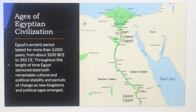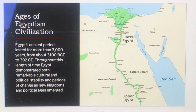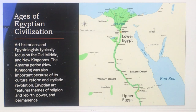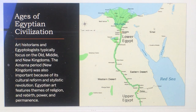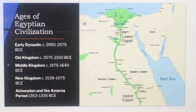The ancient Egyptian civilization lasted more than 3,000 years, from about 3100 BCE to 392 of the current era. Throughout this time, Egypt demonstrated remarkable cultural and political stability as well as periods of change as new kingdoms emerged. Art historians and Egyptologists typically focus on the Old, Middle, and New Kingdoms and the Amarna period. Egyptian art features themes of religion and rebirth, power and permanence.